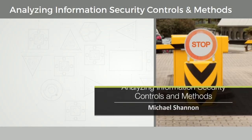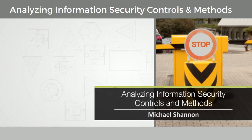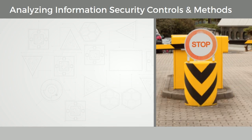In this video, we want to look at analyzing information security controls and methods. There are really several control categories. First, we have preventative controls. These controls basically try to stop any attempts to violate our policy. It could be things like access control enforcement, identity services, AAA services, encryption, authentication, for example. Preventative controls are going to directly focus on our risk or directly countermeasure our risk.